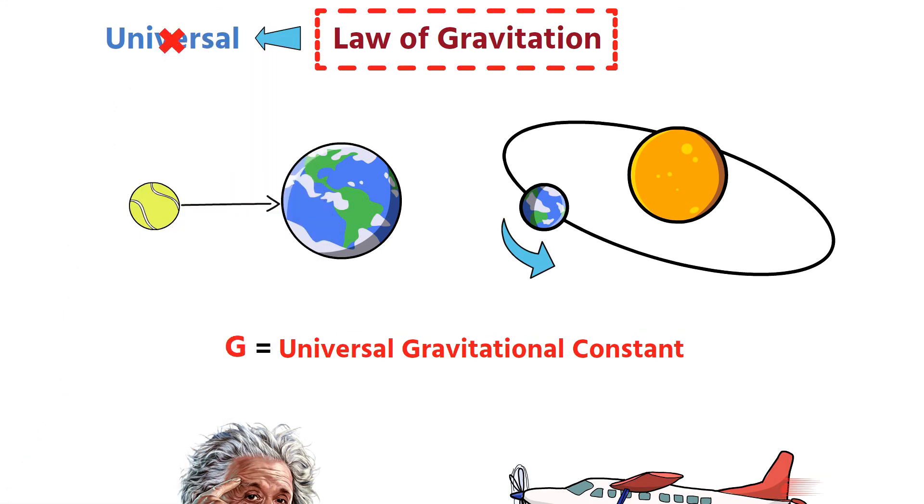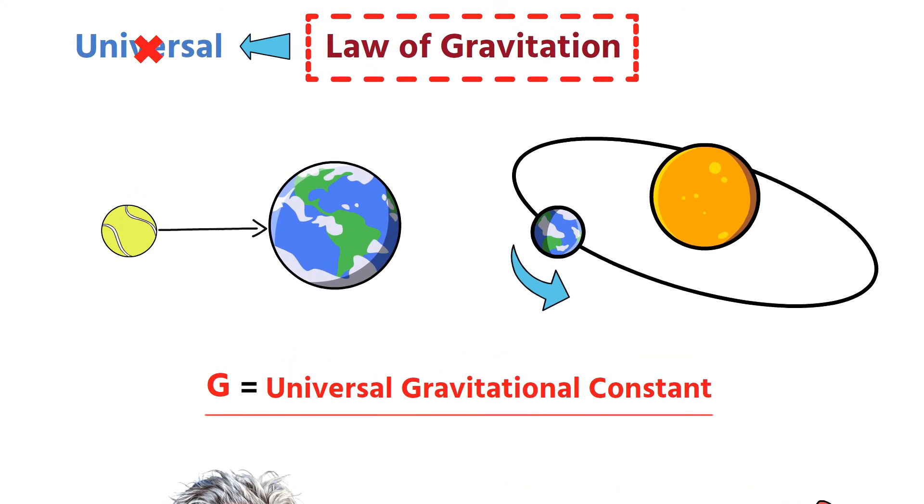However, even in Einstein's theory, the universality of the gravitational constant G is not undermined. In this video, we just learned about the law of gravitation. In the coming video, we will discuss the gravitational field and gravitational potential. So stay with us.